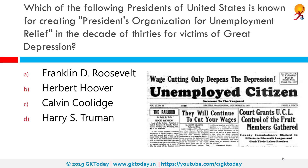Which of the following Presidents of the United States is known for creating the President's Organization for Unemployment Relief in the 1930s for victims of the Great Depression? That was President Herbert Hoover. The President's Organization for Unemployment Relief, originally known as the President's Emergency Committee of Employment, was created on August 19, 1931 by President Herbert Hoover to help US citizens who lost their jobs due to the Great Depression.